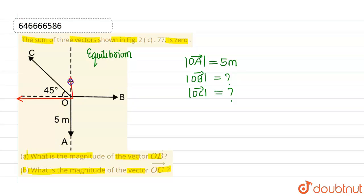And this one is the second component. Now if this is OC then this will be magnitude of OC vector into cos of 45 degrees and this will be magnitude of OC vector into sin of 45 degrees.